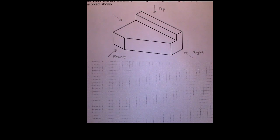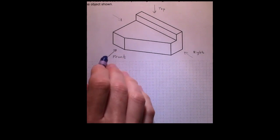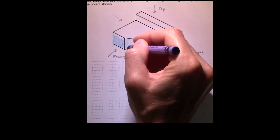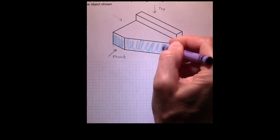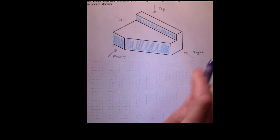Now to get a better handle on visualization, what I like to do is shade in all the surfaces that you're going to see when you're constructing a particular view. So if we're doing the front view and we're looking this way, we would see this surface, that surface, and that surface.